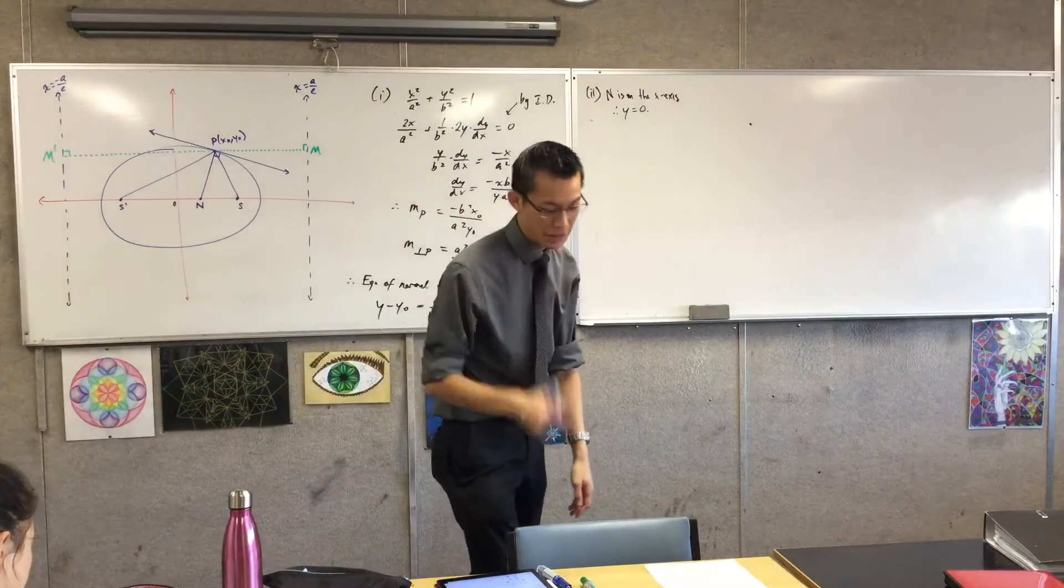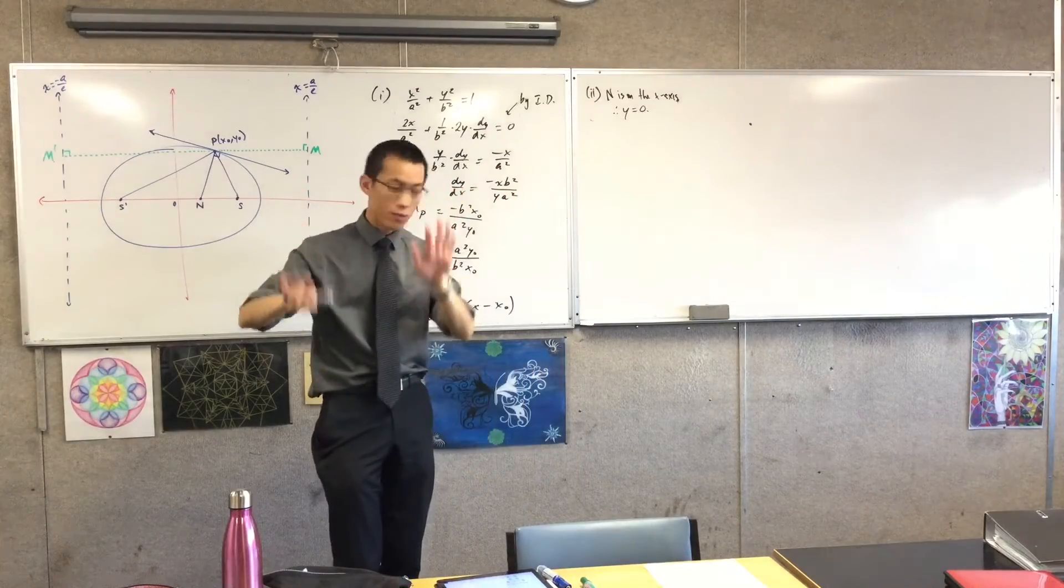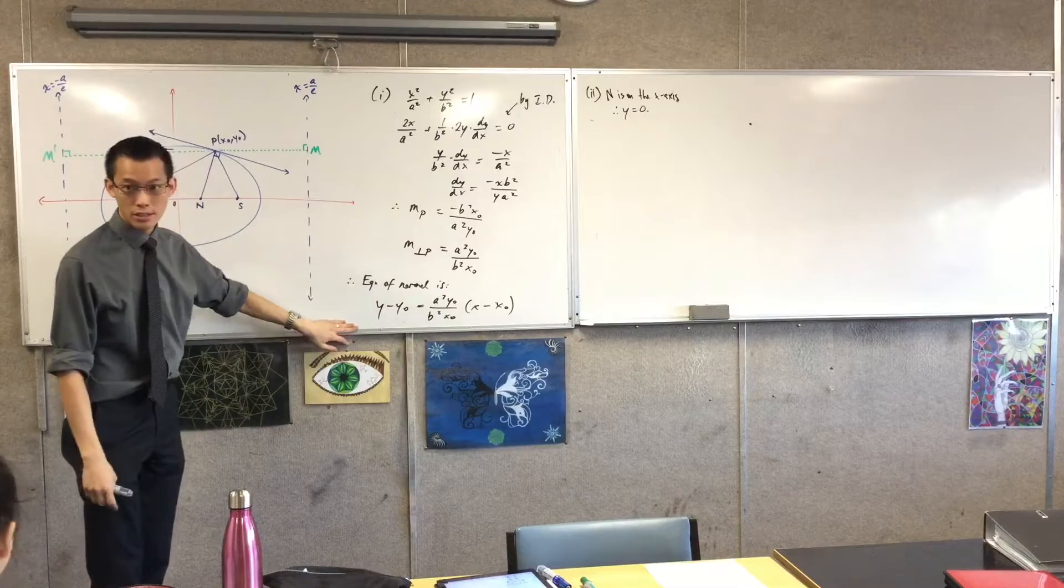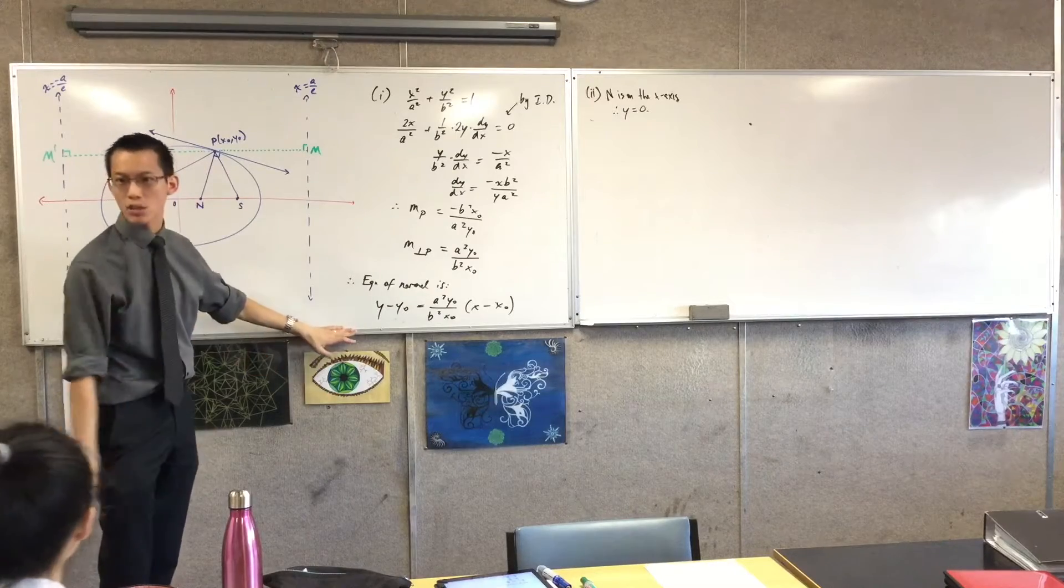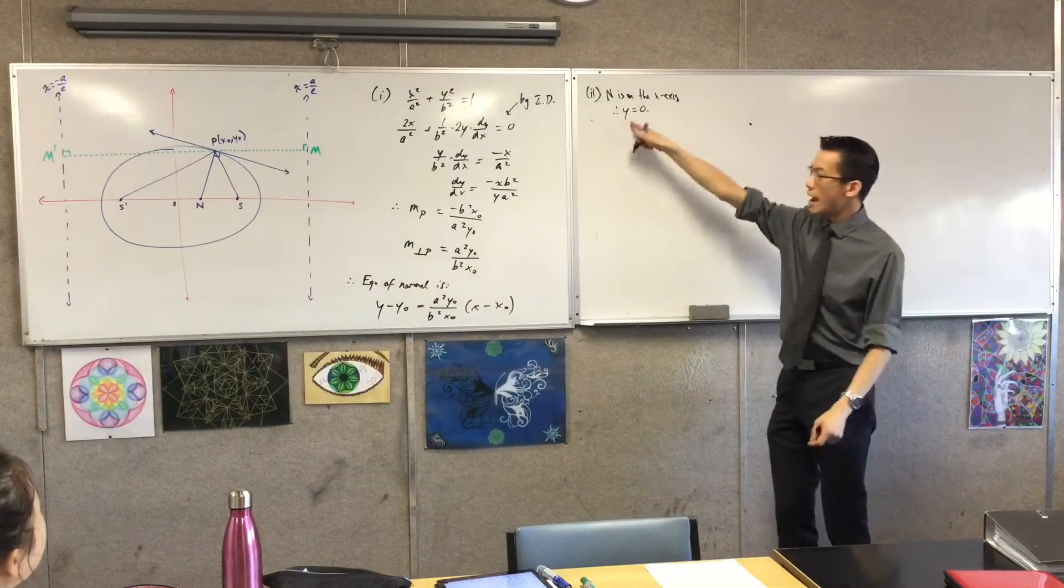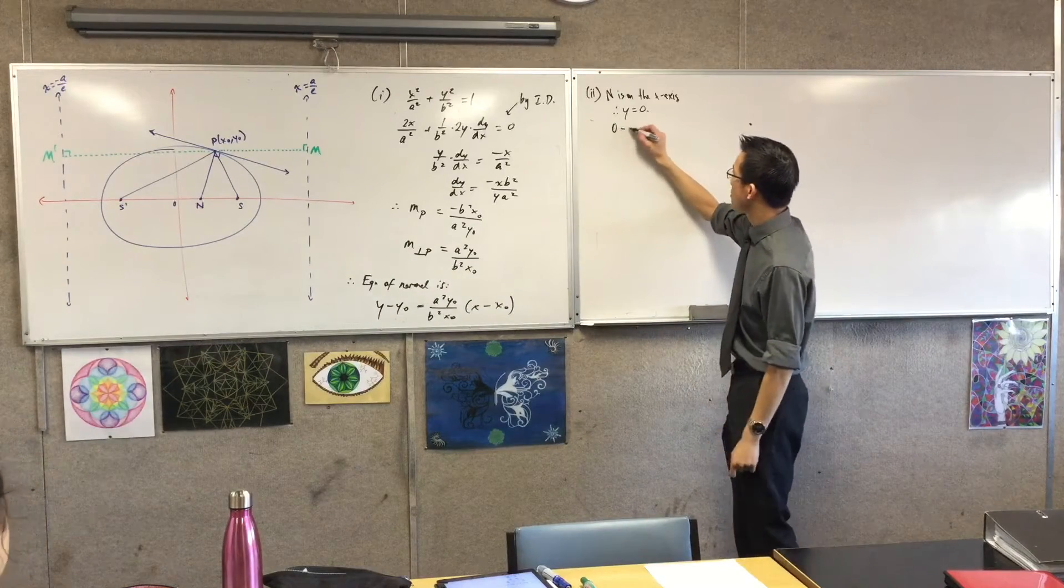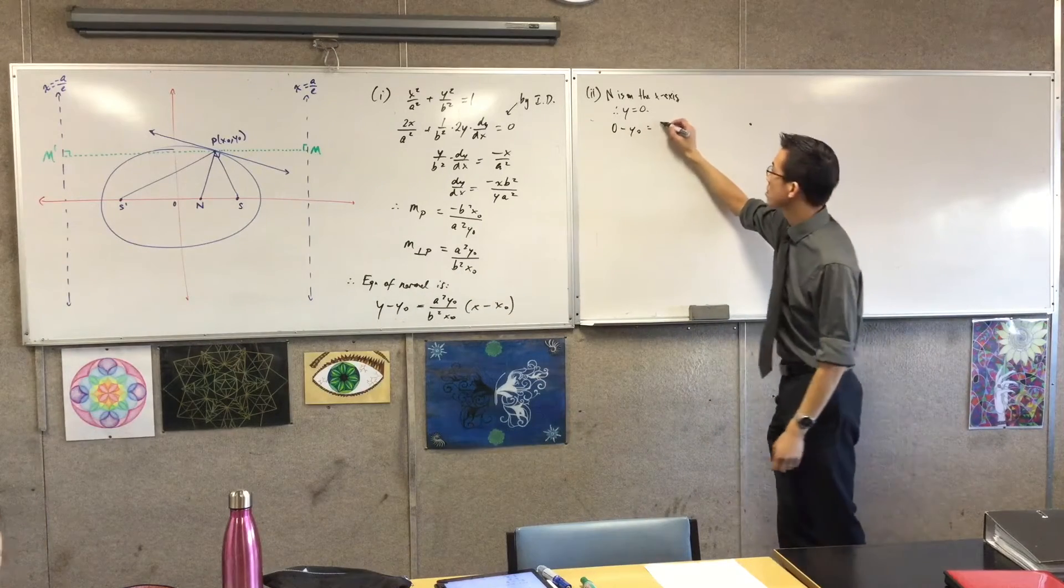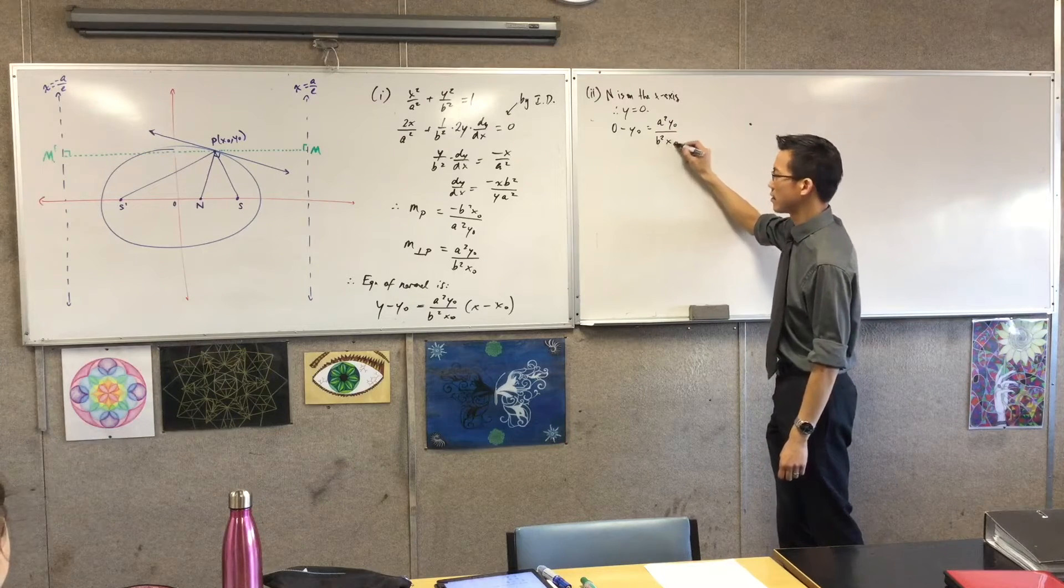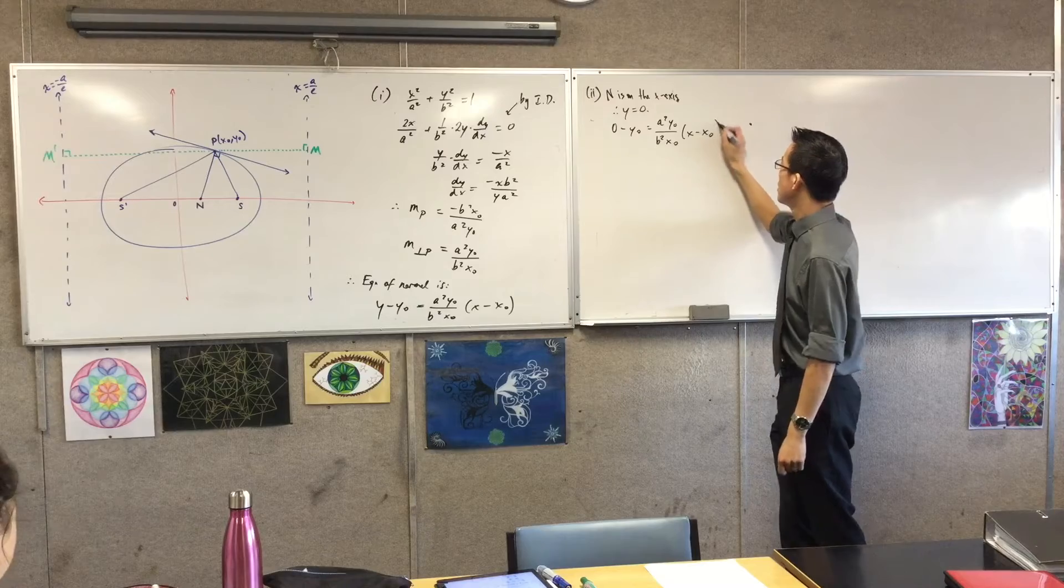Therefore, y is equal to zero. I have to say that first thing, because by definition that's what n is. It meets the x-axis at n, but that gives me the y-coordinate. Remember, I'm asked to show that the coordinate has blah blah blah zero.